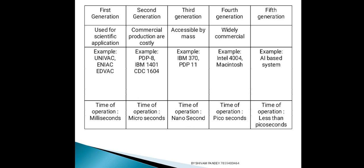Examples की बात करें तो first generation computer में UNIVAC, ENIAC, और EDVAC use होते थे। Second generation computer में IBM 1401, CDC 1604 थे। Third generation computer में IBM 370, PDP-11 थे। Fourth generation computer में Intel 4004 and Macintosh। Fifth generation computer में artificial intelligence based computers का example दे सकते हैं। Time of operations: first generation — seconds में, second — microseconds में, third — nanoseconds में, fourth — picoseconds में काम करते हैं।